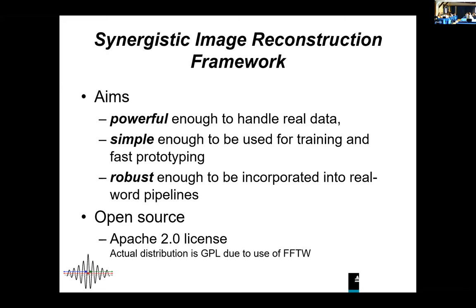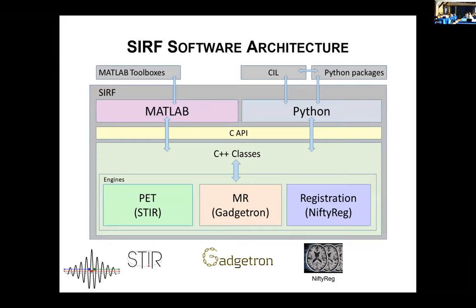It is all open source — we use the Apache 2 license. There is a caveat because the MR side currently uses FFTW, which is distributed under the GPL, so if you use the MR side you're also under GPL, but whatever we produce is Apache 2. It's a framework, meaning there's not a lot of software in SIRF itself — it relies on what we call engines to do the work. We use STIR for PET and SPECT reconstructions, Gadgetron for MR, and NiftyReg for registration, among others.